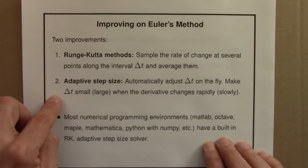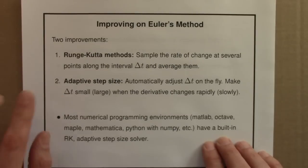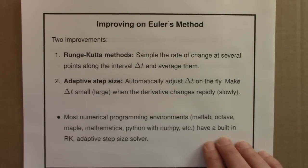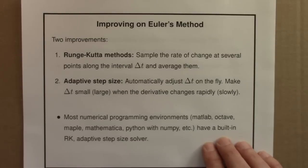I think about adaptive step size this way — it's a rough analogy, but it maybe gives the right idea. Imagine you're walking across a landscape and you're blindfolded; you can't see. If the landscape is flat, you can take very big steps and you're not going to miss anything. But if the landscape is very bumpy, you'll need to take small steps to make sure you don't trip or miss something. So if you're blindfolded, you might adjust your step size depending on what you sense the terrain to be.